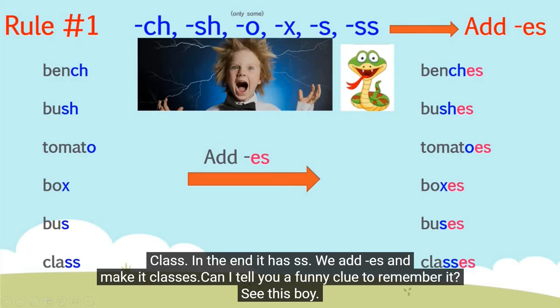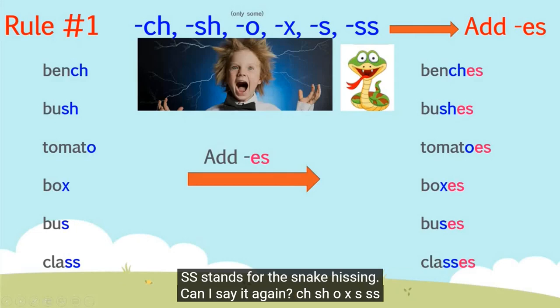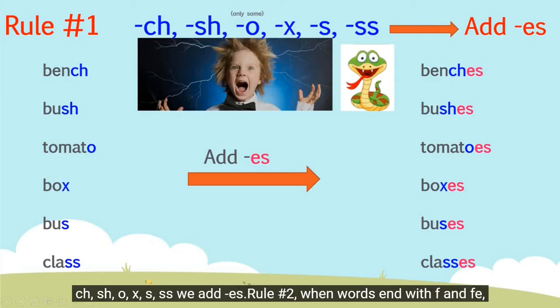Can I tell you a funny thing to remember it? See this boy — magic shock waves are coming from his head. So we pronounce it as CH, SH, O, X, S, SS. So rule number one tells us that if words end with CH, SH, O, X, S, or SS, we add ES.